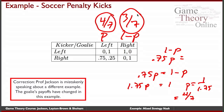So we know what the goalie is supposed to be doing. The goalie's own payoffs haven't changed, but the fact that we changed the kicker's payoffs meant the goalie actually had to adjust. Even though the goalie's payoffs haven't changed at all in this game, the new equilibrium has a different set of probabilities for the goalie in order to keep the kicker indifferent.